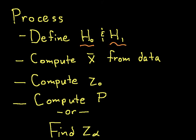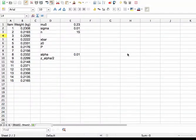The next thing to do is to compute x̄, that is our sample mean from the data that we've gathered. I've set the data up in a spreadsheet. You can see along the left here we have the 15 different items that have been weighed and the weight that we got for each item in kilograms.